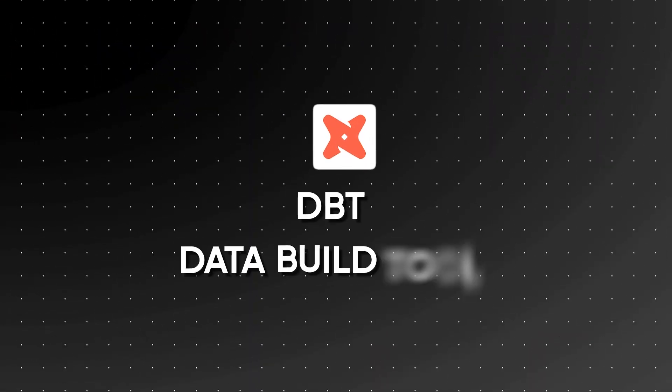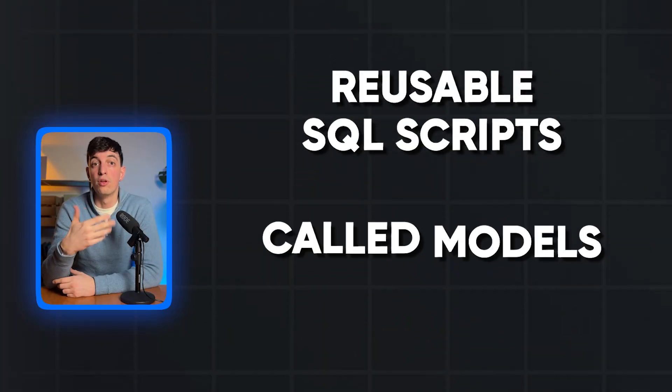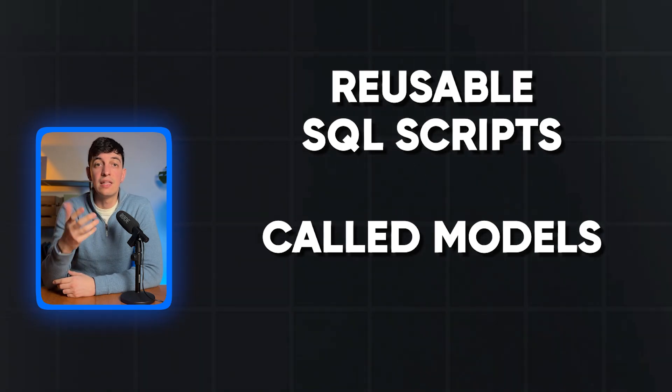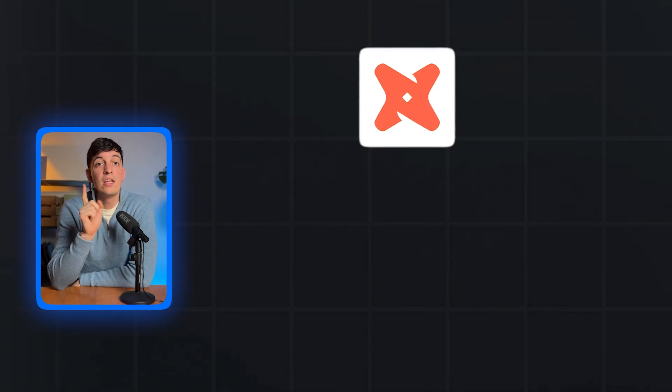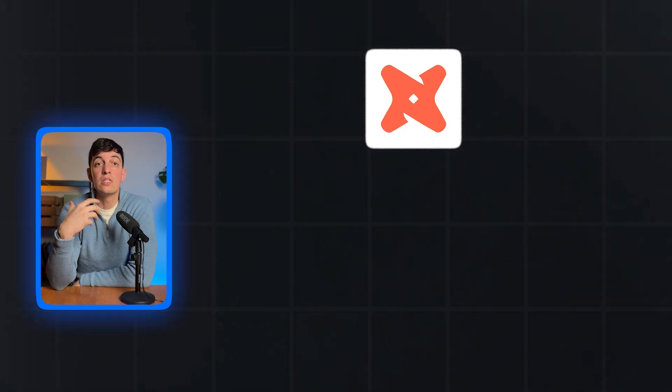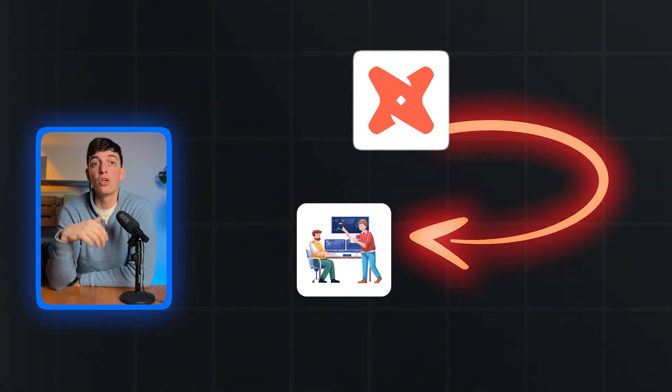There is another tool that is becoming super popular in the market, and that is called DBT, which stands for Data Build Tool. This is an essential tool for transforming raw data into something usable and insightful. It allows me to create reusable SQL scripts called models that transform data consistently across different datasets. One interesting thing about DBT is that it treats your SQL transformations like software development — allowing you to test, document, and version control your transformations just like code — which means the data is reliable and can be used by other team members without issues.